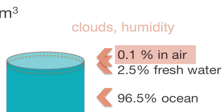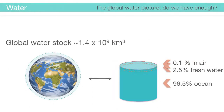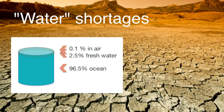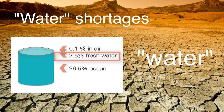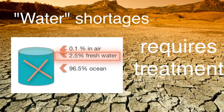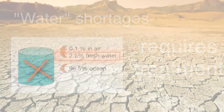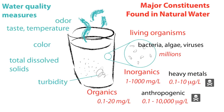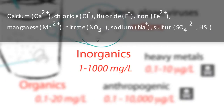So this gives you a sense of where the water actually is and in what form. When you hear talk about water shortages, water means fresh water — salt water is not fit for human consumption. Much of natural water is also not fit for human consumption.